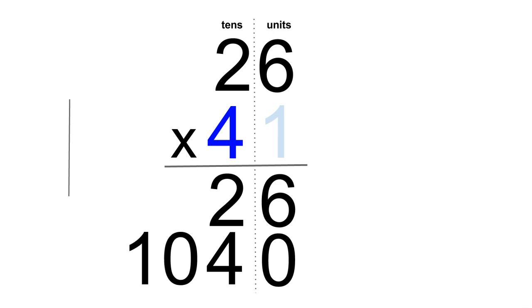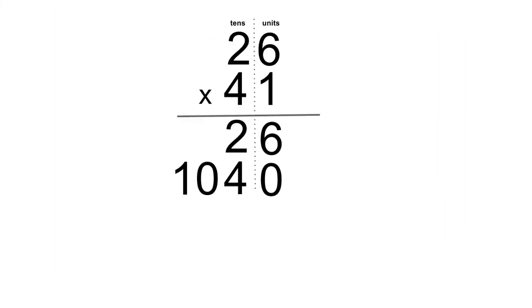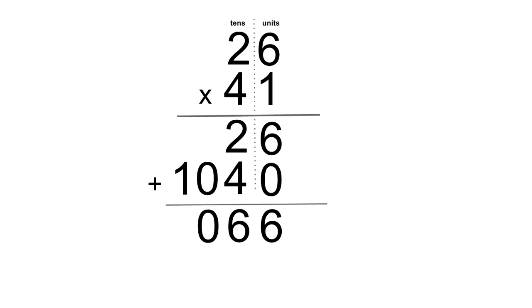We have now finished multiplying the bottom number 41 by the top number 26. The final step is to simply add the numbers in the answer columns. 6 add 0 is 6. 2 add 4 is 6. 0 add nothing is 0. And 1 add nothing is 1. So the answer to 26 multiplied by 41 is 1066.